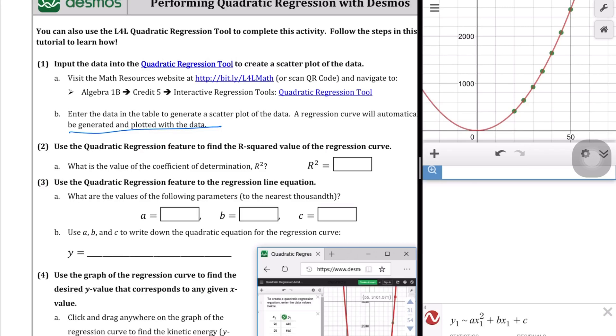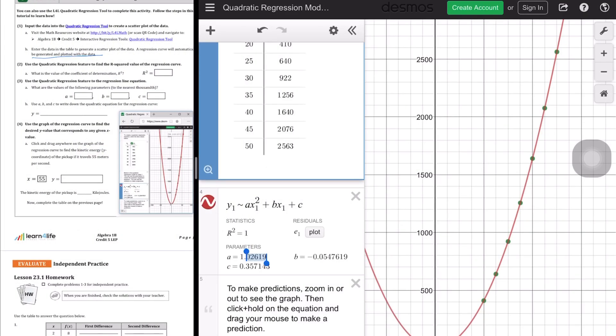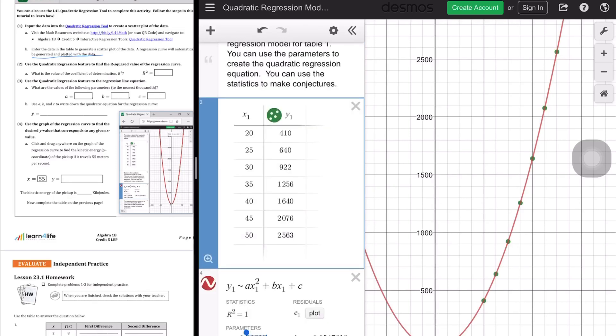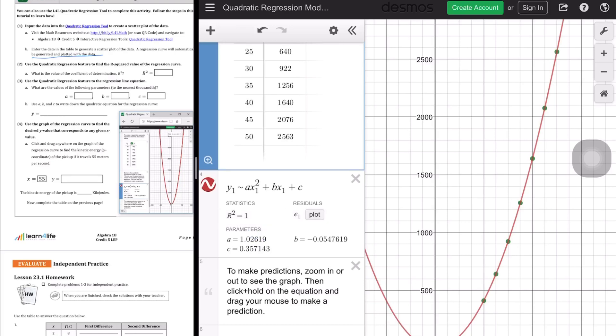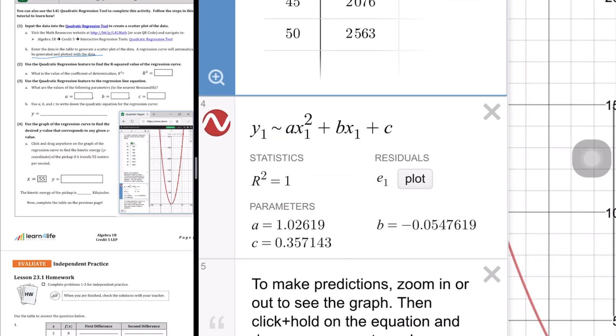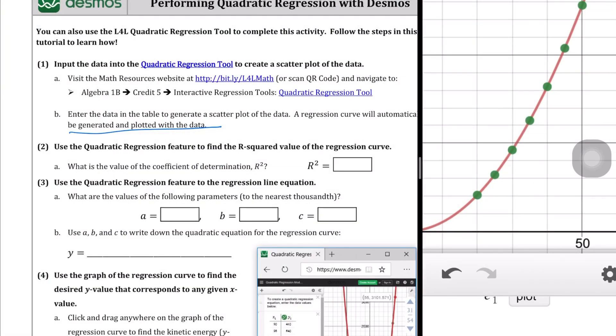They want to know, what is the value of the coefficient of determination in question 2? So they want that r squared value. And if we look back at the Desmos tool here, we see that r squared equals 1. r squared equals 1. So let's go ahead and input that here. r squared equals 1.